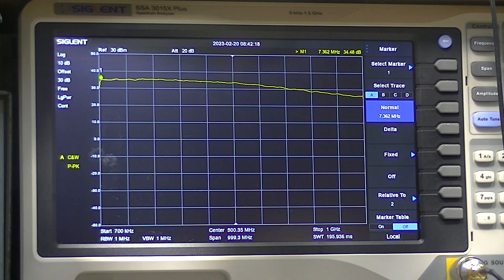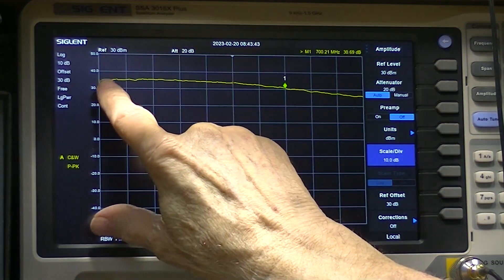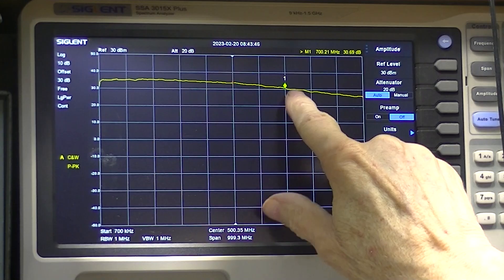Remember 30 dBm is 1 watt, and 35 dBm is 3.2 watts. So we're above 34 which is above 2.5 watts. And here at 700, we're down to 1 watt of output. So we have about 3 watts right in here, and about 1 watt here.